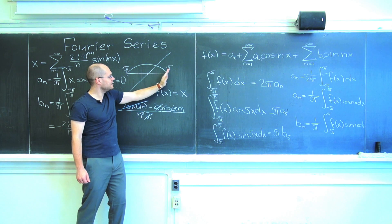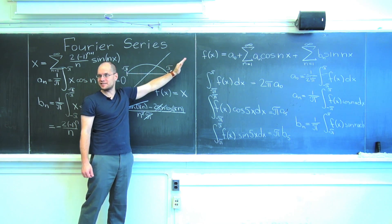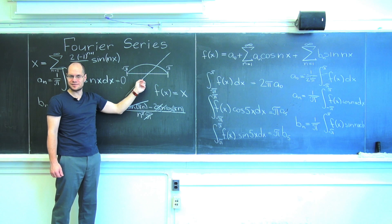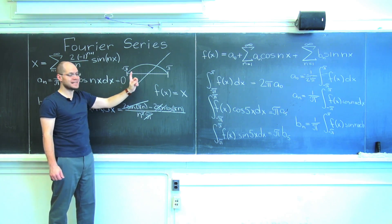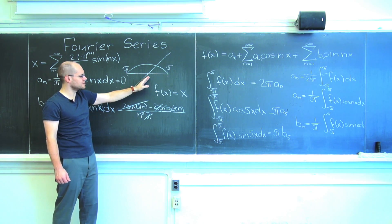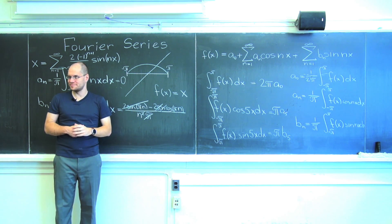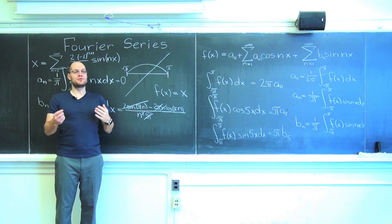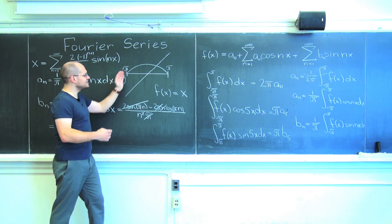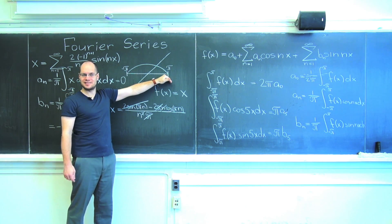So the derivative might kind of look like this. So if that's the kind of function that we're considering, then the coefficients will decay as one over n squared.